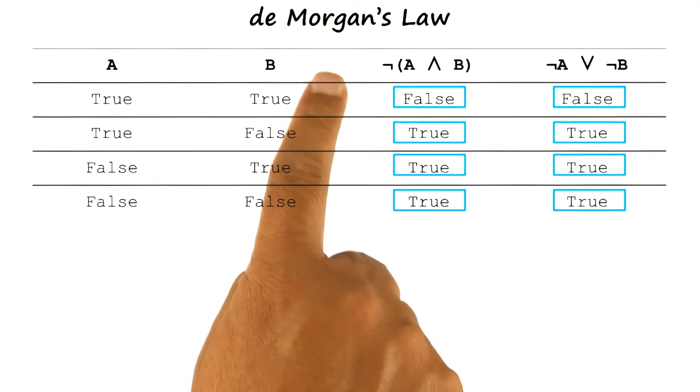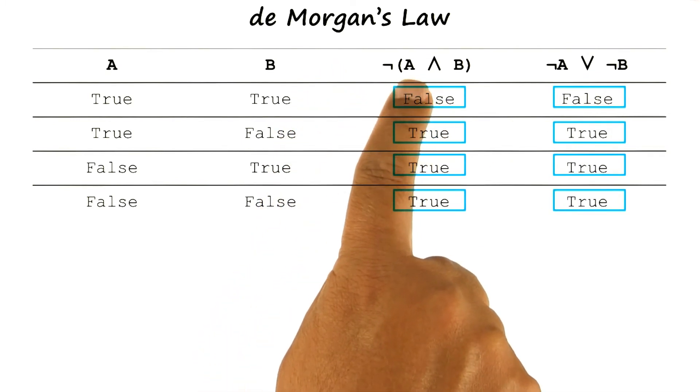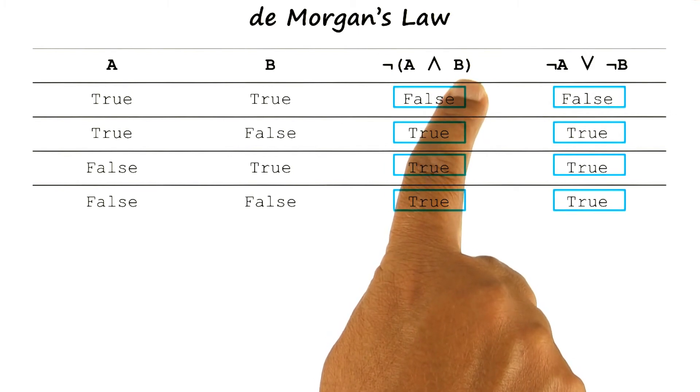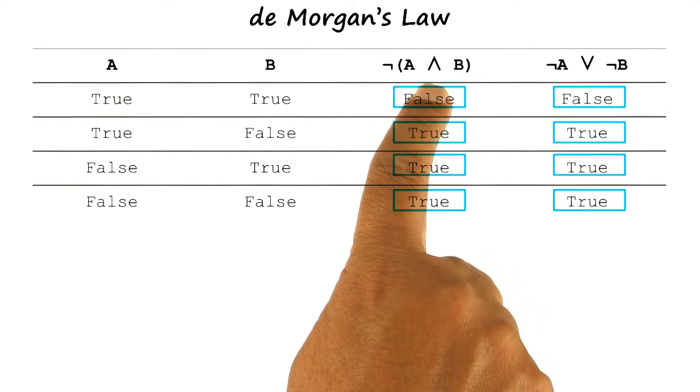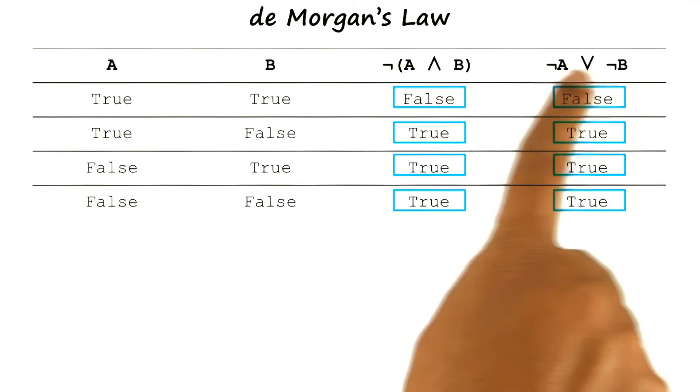That's good, David. De Morgan's law says that when we distribute the negation over predicates inside parentheses that are connected with a conjunction, the conjunction becomes a disjunction between the negations of the predicates.